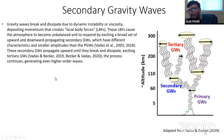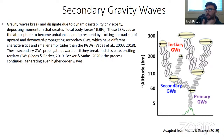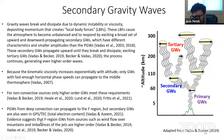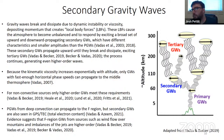In addition to these primary gravity waves, there's been work by Sharon Vadas and Erich Becker and others that have looked at secondary gravity waves. Once these gravity waves break near the mesopause, they can launch secondary and tertiary gravity waves that can then move on to have other impacts. Evidence suggests the F-region gravity waves from sources such as wind flow over mountains and jet imbalances are higher-order — secondary and tertiary — gravity waves impacting the F-region of the ionosphere. So if we can change the gravity waves in the stratosphere and the mesosphere, we could change gravity waves all the way up through the ionosphere.